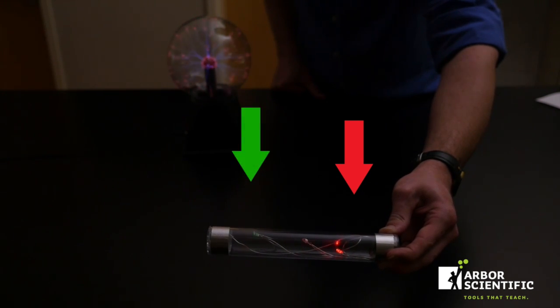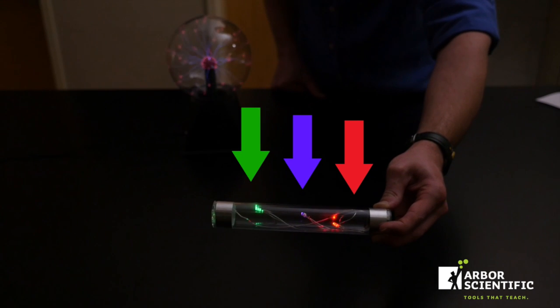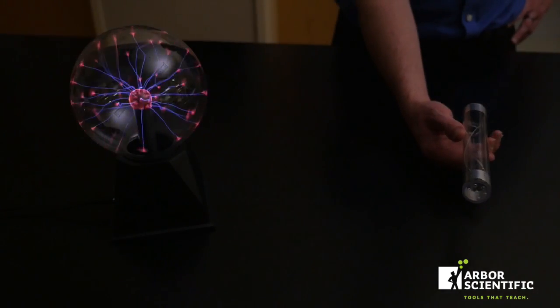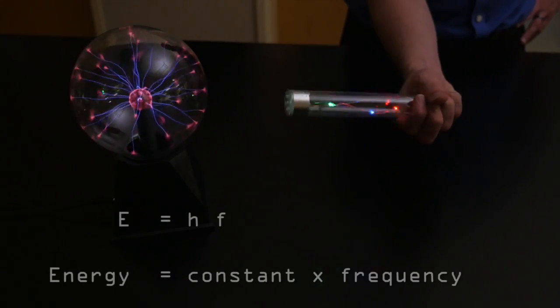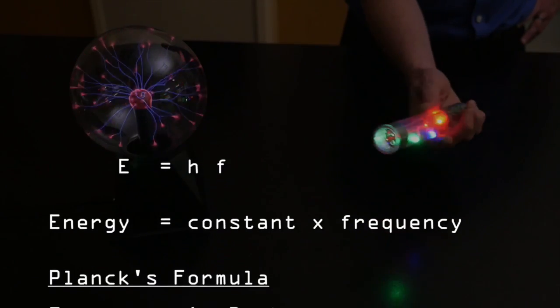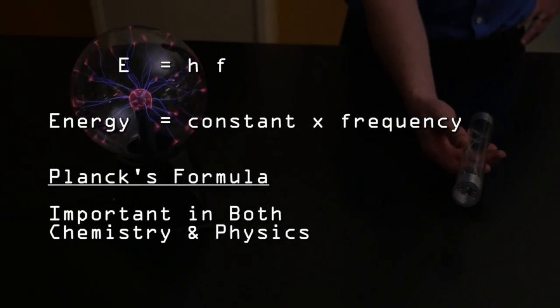This is a lesson in modern physics and quantum mechanics. That is, it's not the brightness of the light, but the frequency—the color of the light—that is important. Energy is in direct proportion to frequency, and blue light has a higher frequency than red light.